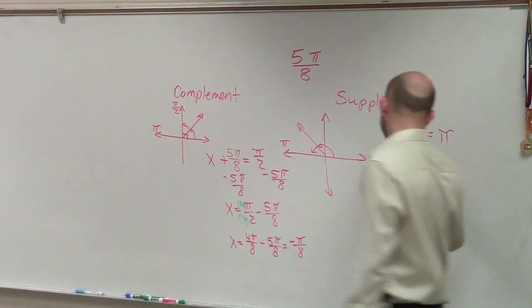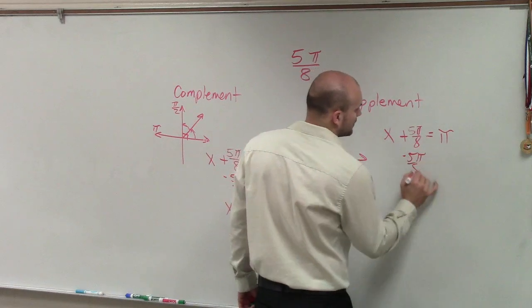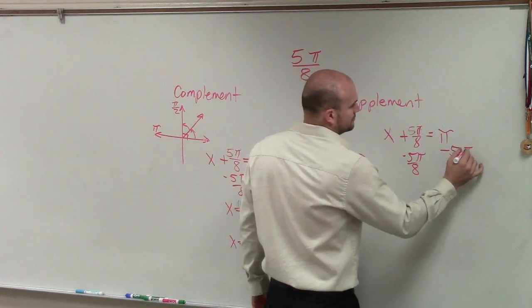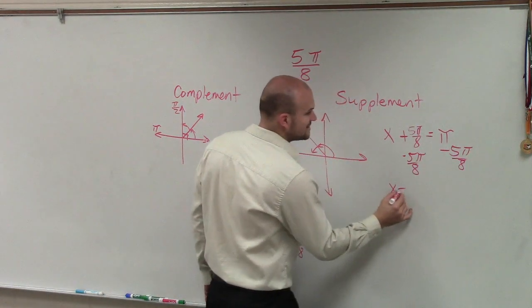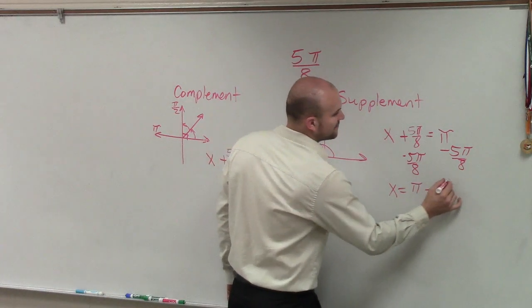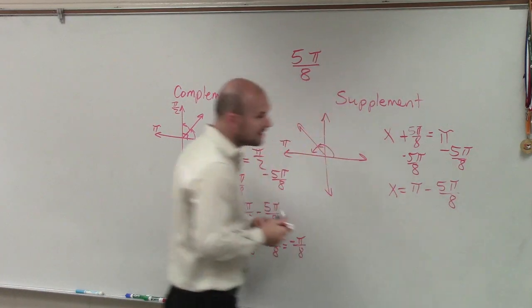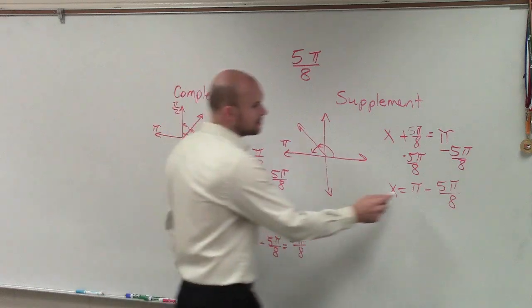So let's go and do the supplement. So I subtract 5π/8. So therefore, I have x equals π minus 5π/8. Again, we need to get the common denominator. So I'll put this over here.